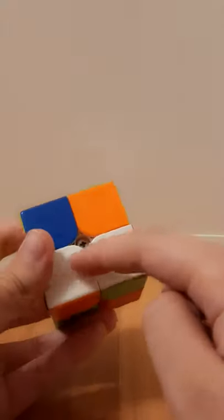This is an example solve of the Ortega method, which is the method that I use for a 2x2. So here I noticed I have a bar already here on white and I have a bar on yellow.